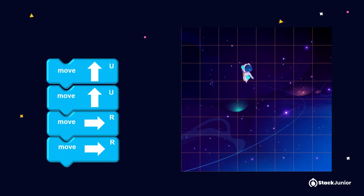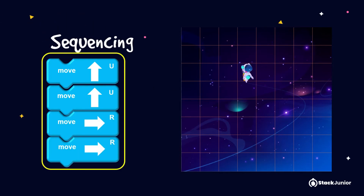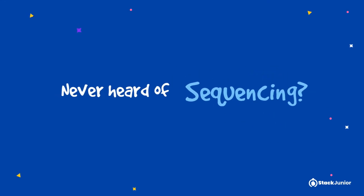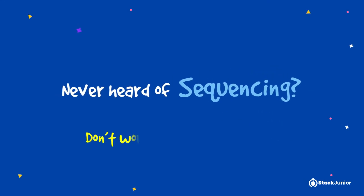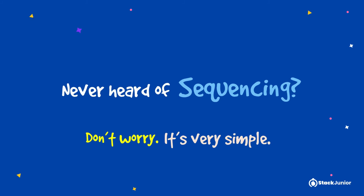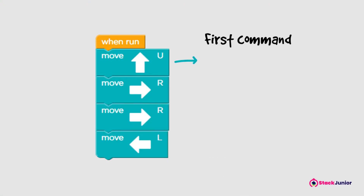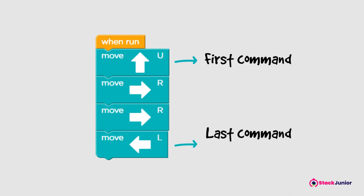The arrangement of those code blocks which made Robo-X get to the space rock is called sequencing. Never heard of sequencing? Don't worry, it's very simple. Sequencing means following step-by-step instructions or commands in the right order, from the first command to the last command.